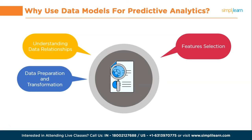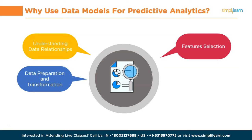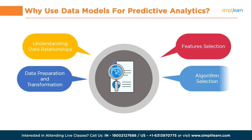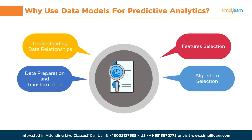Third, data preparation and transformation: before applying predictive analytics techniques, data often needs to be pre-processed, transformed, and cleaned. Data models provide a blueprint for these data preparation steps — they define the structure and format of data, specify data types, handle missing values, and establish rules for data normalization or scaling. Data models ensure that data is in a suitable form for analysis, which is essential for accurate predictions. Fourth, algorithm selection: different predictive analytics algorithms have specific requirements and assumptions about the structure and format of data. Data models provide insights into the characteristics of the data, such as its distribution, scale, and relationships, which can guide the selection of appropriate algorithms. For example, linear regression assumes a linear relationship between variables, while decision trees handle categorical variables well. Data models help align the data with the algorithm's requirements as needed.